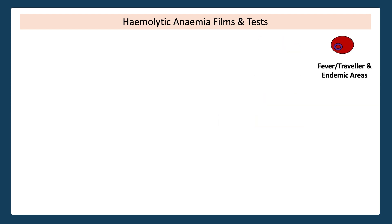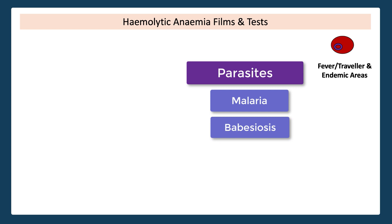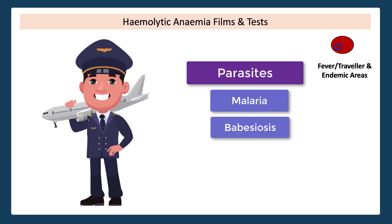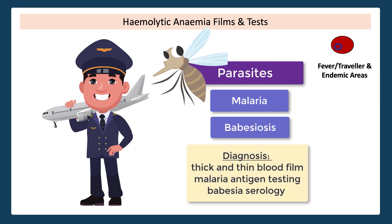The last red cell abnormality to discuss is the presence of visible parasites inside the red cell — think malaria and babesiosis. The clinical context is likely a febrile illness in a returned traveler or someone who resides in an endemic area. To look for these parasites, you can perform a thick and thin blood film as well as more specific testing.